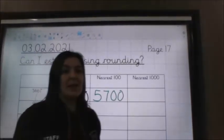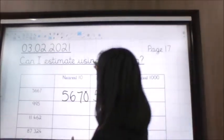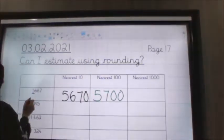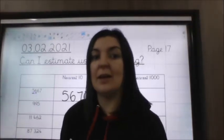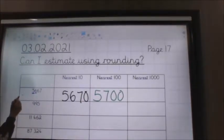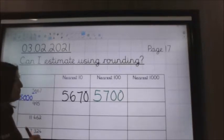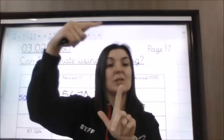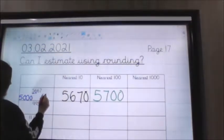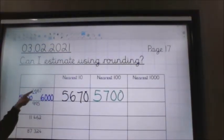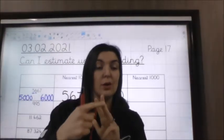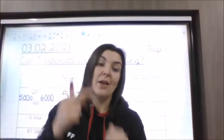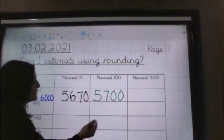And then the final one is the nearest thousand. This time I need the thousands column and the hundreds column. First job: which two thousands is it in between? My first thousand is 5,000 and then counting in thousands the next one would be 6,000. Then I go to the hundreds column. Remember my rule: 0, 1, 2, 3, 4 we round down; 5, 6, 7, 8 or 9 we round up. It's a six, so we round up to 6,000.